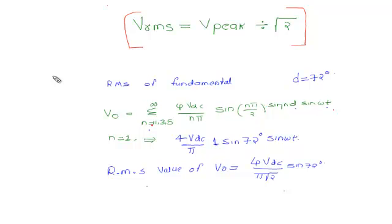Substituting the value of n = 1 in the equation, we get 4Vdc / (1 × π) × sin(π/2). Since sin(90°) = 1, this term simplifies to 1.